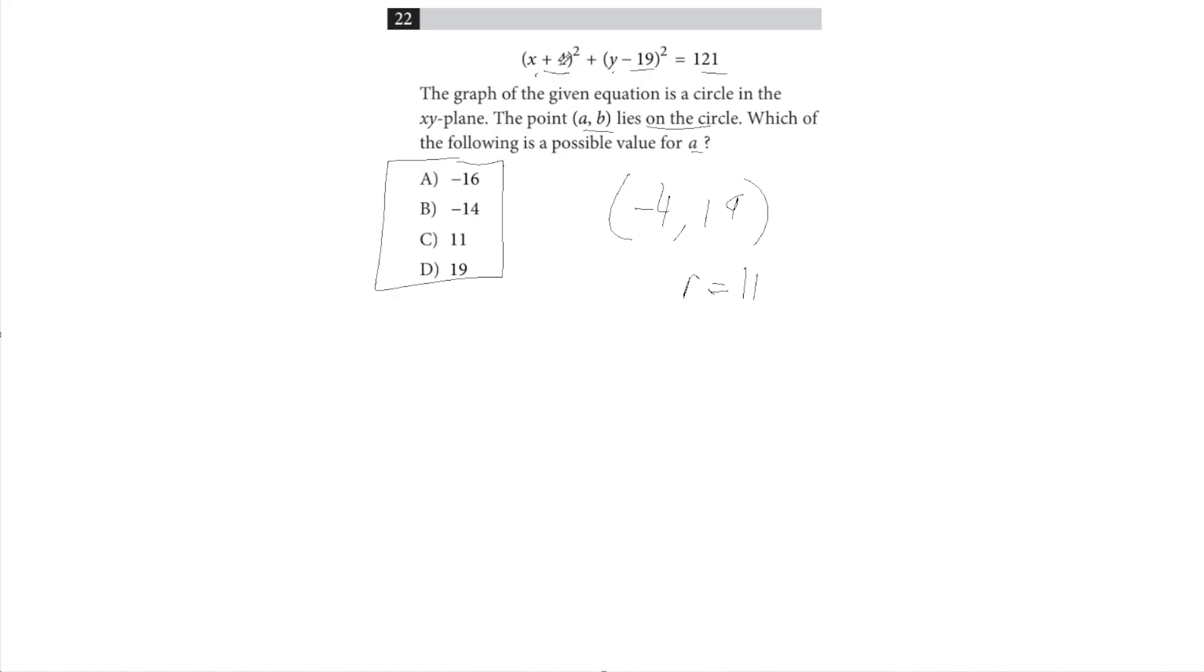So in this case, x plus 4 squared plus y minus 19 squared. These are pretty big numbers, right, when we're squaring and we want it to equal 121. So something we can look at is if we want to plug in values and make sure they work, they have to at least always be less than 121.